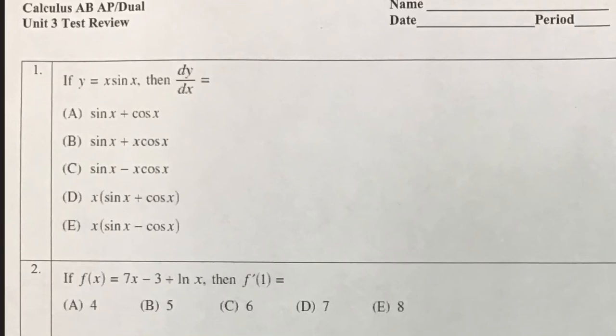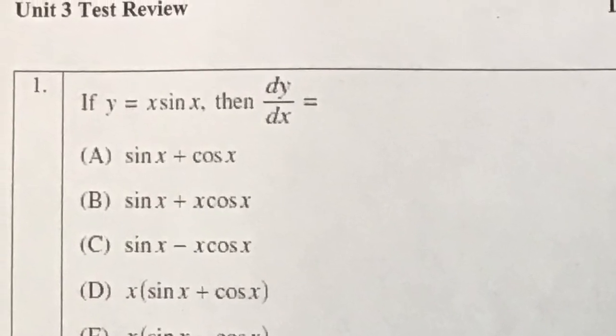This is a video about the multiple choice portion of your Unit 3 test in AP Calculus. We start off with finding the derivative of a product of two functions — an f function and a g function. We'll call f just x, and sine is going to be your g. To find the derivative, this looks like a perfect opportunity to apply the product rule.